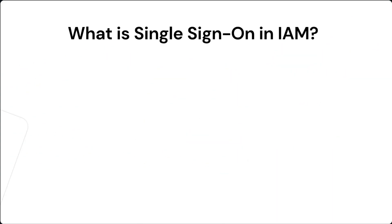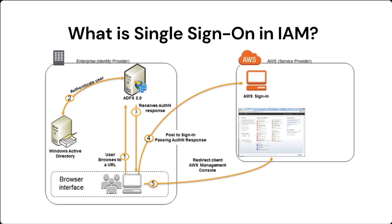The next question is: what is Single Sign-On in IAM? Single Sign-On is used to integrate multiple AWS accounts with a centralized authentication mechanism like Windows ADFS. In this setup, user authentication is done by the customer's Active Directory and a sign-in token is generated by the ADFS server. Using this feature, you can access multiple AWS accounts using the same credentials.